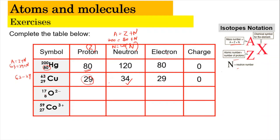For the oxide ion (O²⁻), the proton number is 8. Neutrons: 17 − 8 = 9. In the neutral state, the number of electrons would be 8. However, the 2− charge means the atom received an additional 2 electrons, so the total number of electrons is 10, and the charge is 2−.